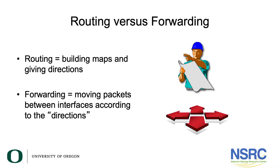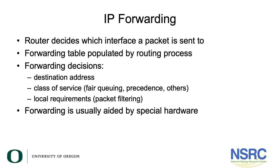In this section we're going to talk about the difference between routing versus forwarding. Routing is equivalent to building maps and giving directions, whereas forwarding is simply moving packets between the interfaces according to those directions. When we talk about IP forwarding, we mean that the router decides which interface a packet is sent to. The forwarding table is usually populated by the routing process.